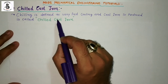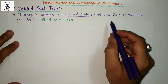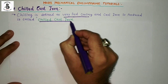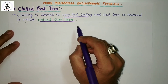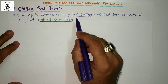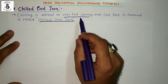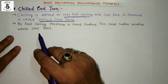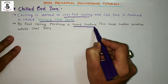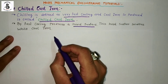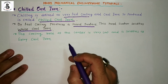Chilling is defined as very fast cooling. The product produced is known as chilled cast iron. In this process a rapid cooling process is used to make such kind of cast iron. By rapid cooling, or fast cooling, a hard surface is produced. This hard surface is solidified white cast iron, formed by very fast cooling.